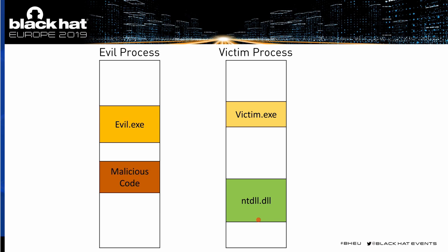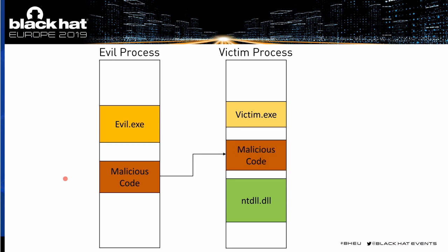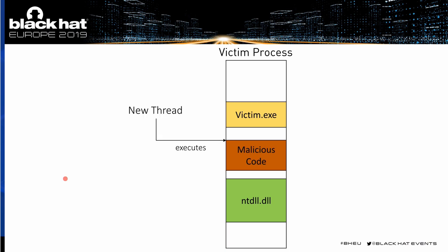In this case here, we have two processes — the victim process and the attacker process. The evil process wants to inject its malicious code into the victim process, so that it runs in the victim process and the evil process can disappear. First, it gets a handle to the victim process. Then it will allocate some memory into the victim process, which is the gray area over here. Then it writes the malicious code into the victim process. And then the last step, it will create a new thread, and the malicious code is running inside the victim process. And evil.exe can disappear and is no longer active.